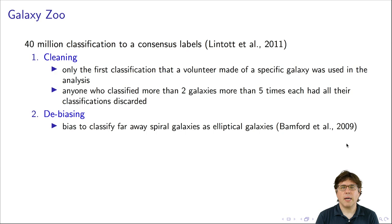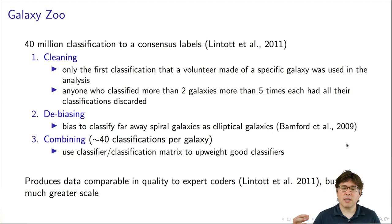The second step is debiasing. By having a large number of classifications and combining them, you can get rid of any idiosyncratic noise from any of the people. However, if everyone is biased to make a certain kind of classification, then that bias doesn't go away just by averaging. For example, they found with a study within their Galaxy Zoo project that there was a bias to classify far away spiral galaxies as elliptical galaxies. So they were able to adjust for this bias.